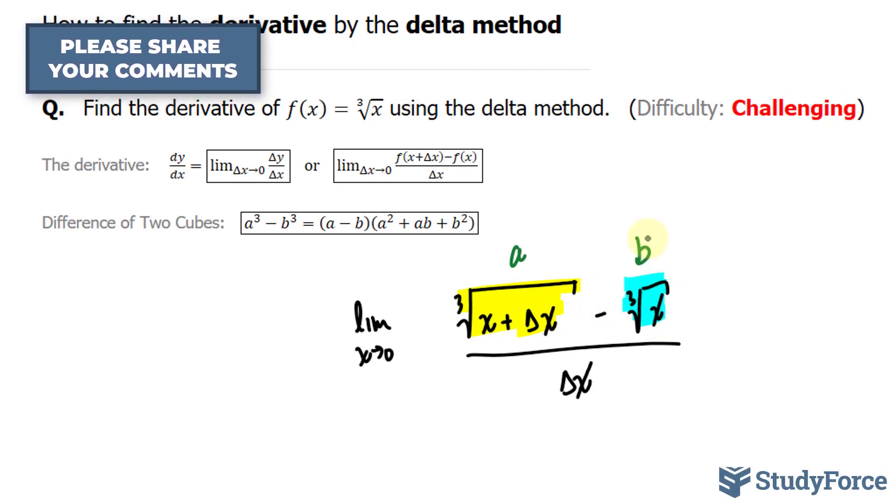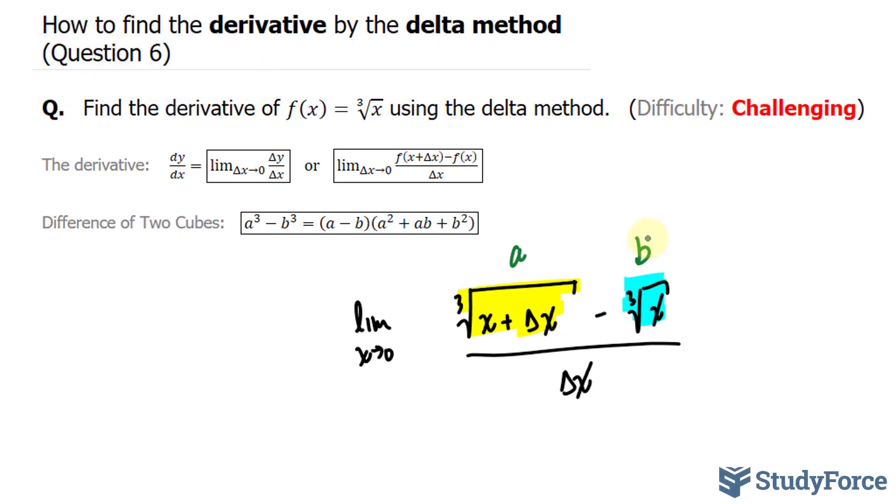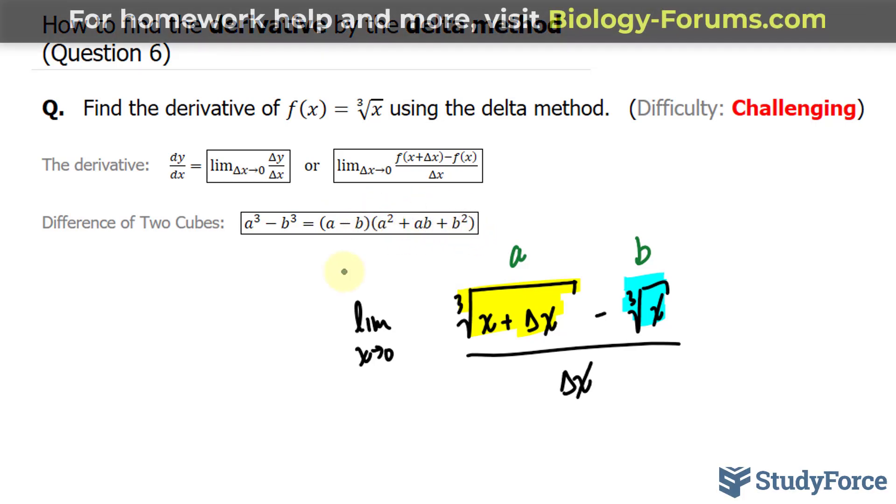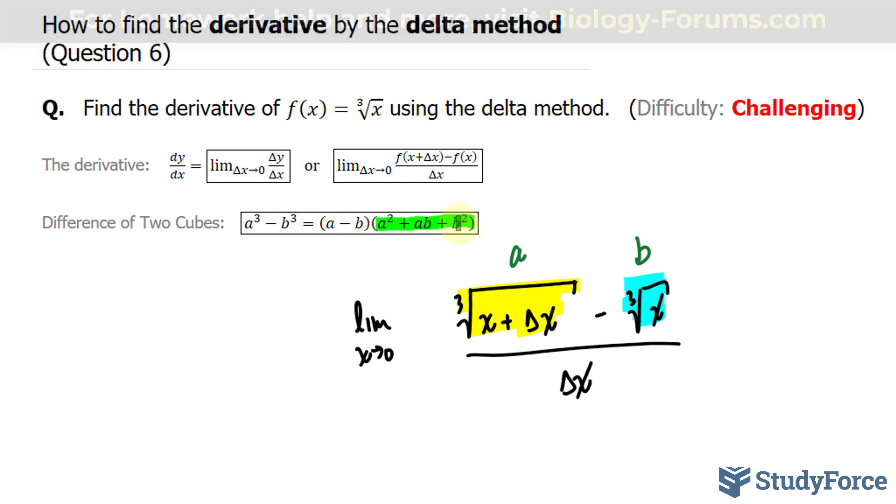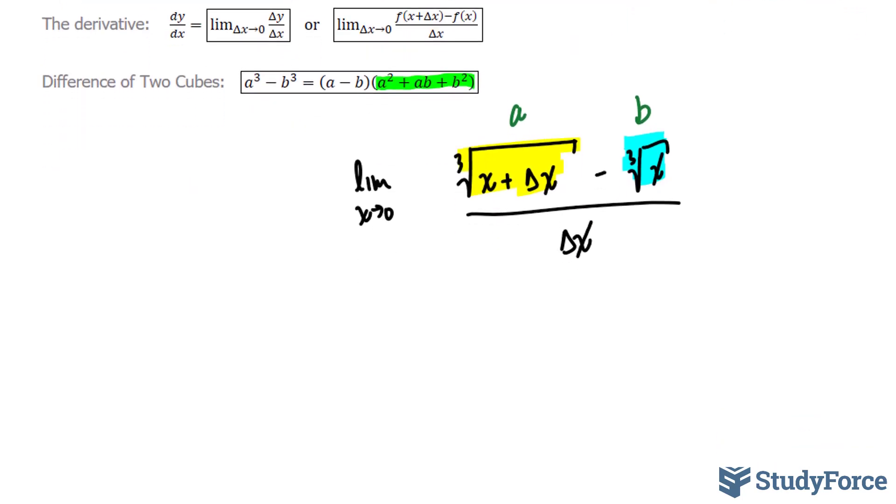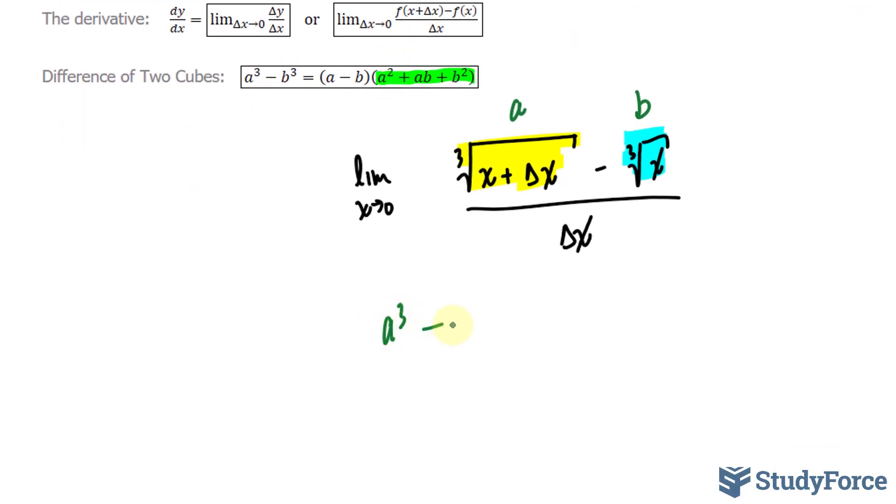So technically what we have is a minus b over delta x. And if you look closely at this relationship, this equation, we can rearrange the factors here. Take for example, this factor is being multiplied to this whole expression in brackets. If I divide both sides by this part of the expression, I'll end up with this. I'll have a cubed minus b cubed over a squared plus ab plus b squared is equal to a minus b.